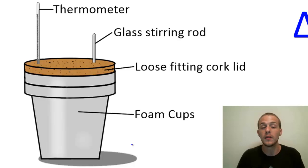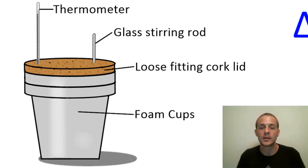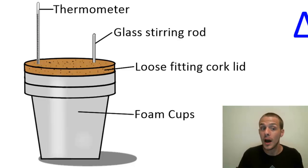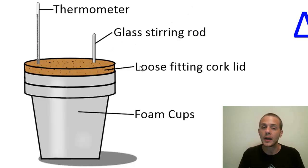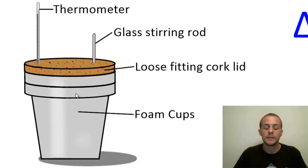Since the lid fits loosely, there are no changes in pressure and we have constant pressure conditions within the system. A reaction takes place inside the cups, normally in a solution. A glass stirring rod helps stir the solution to make sure all reactants convert to products, speeding up the reaction. A thermometer is inserted into the cups so you can measure the temperature throughout the chemical reaction.